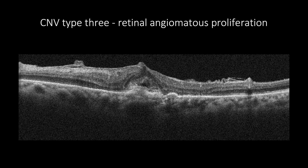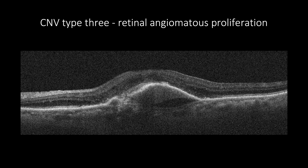Retinal angiomatous proliferation, CNV type 3, has three stages. This is better diagnosed with ICG. On OCT, stage 1 appears as intraretinal hyperreflectivity due to intraretinal capillary neovascularization with increased retinal thickness. Stage 2 shows hyperreflectivity at the level of outer retinal layers. Stage 3 appears as CNV anastomosis with intraretinal neovascularization.